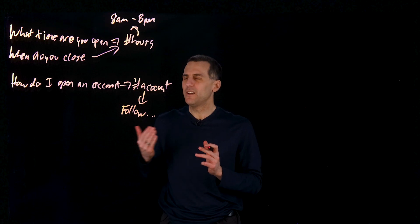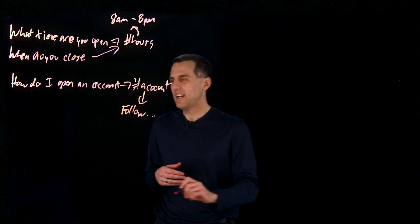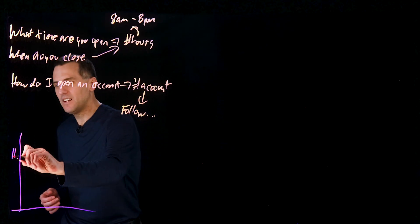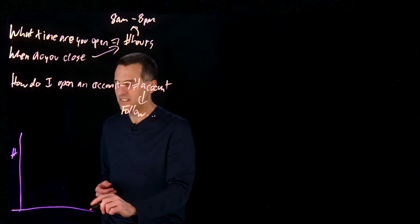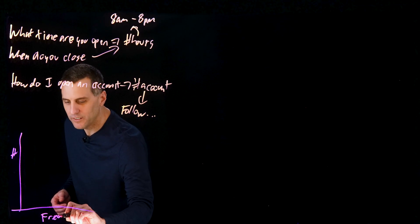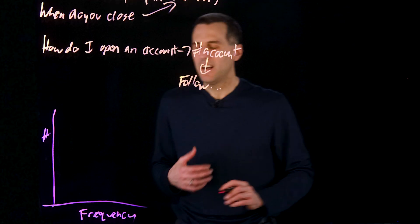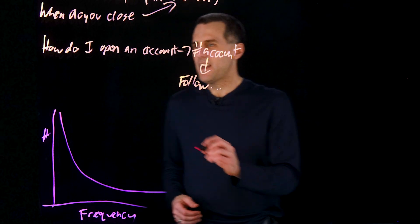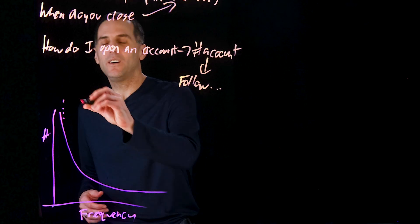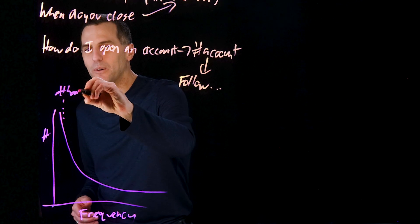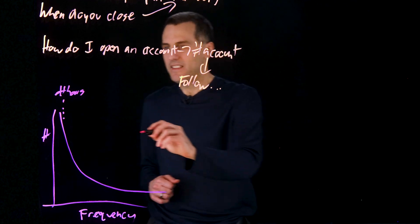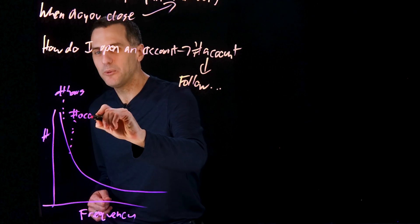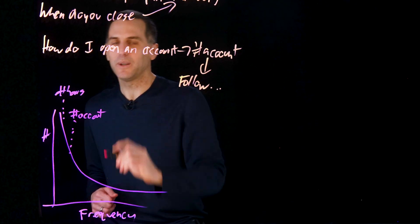Let's imagine how this training scaled out. I could plot a curve for the kinds of questions my chatbot received — the number of times I get each question on one axis, and the frequency of the questions on the other. And when I do that, it tends to look something like this. I've got a nice long curve, and at the top are the questions I get all the time. I probably get that hours question the most, and then accounts — I get that a lot, maybe not quite as much, but it's still a very frequently asked question.